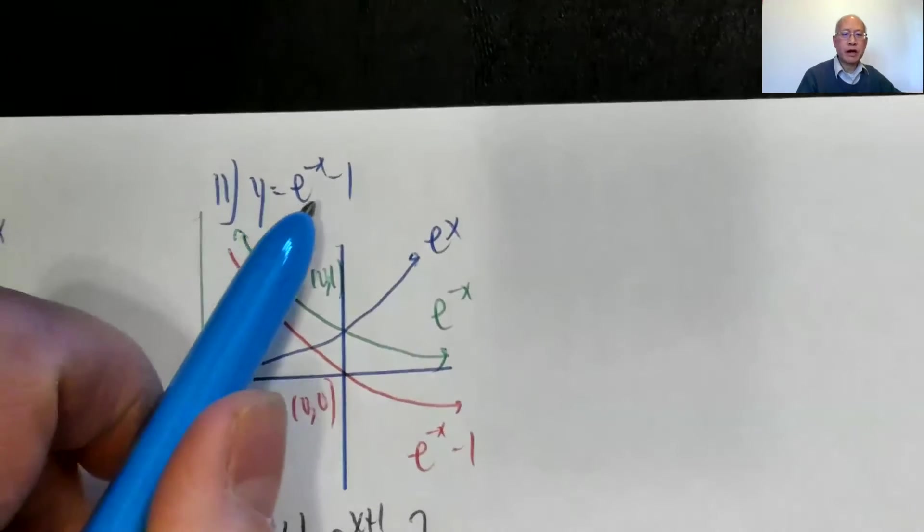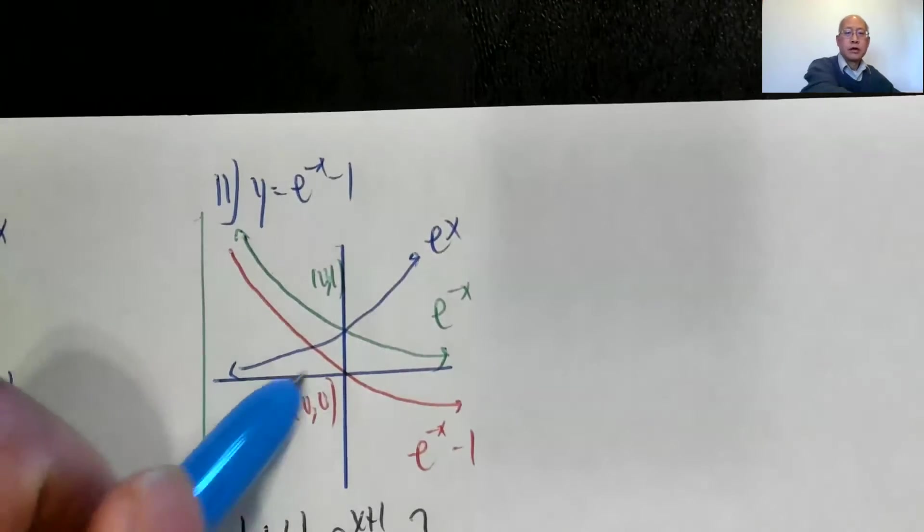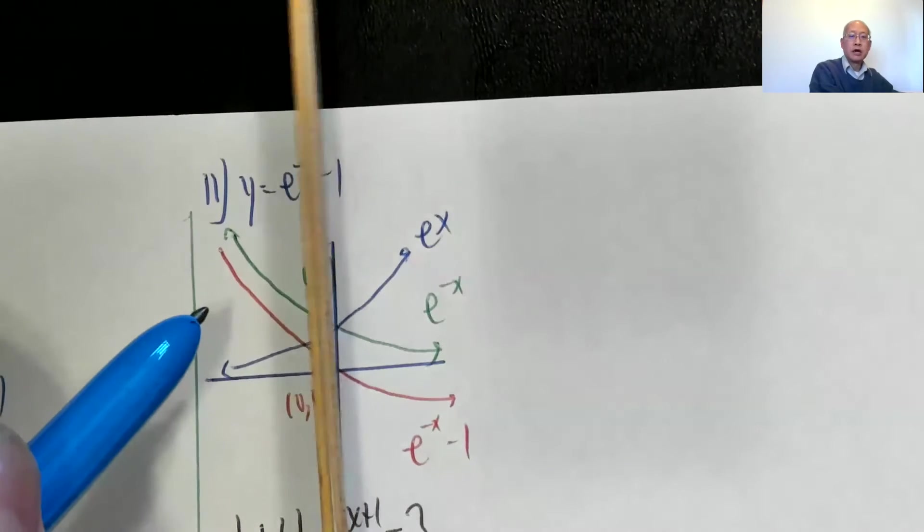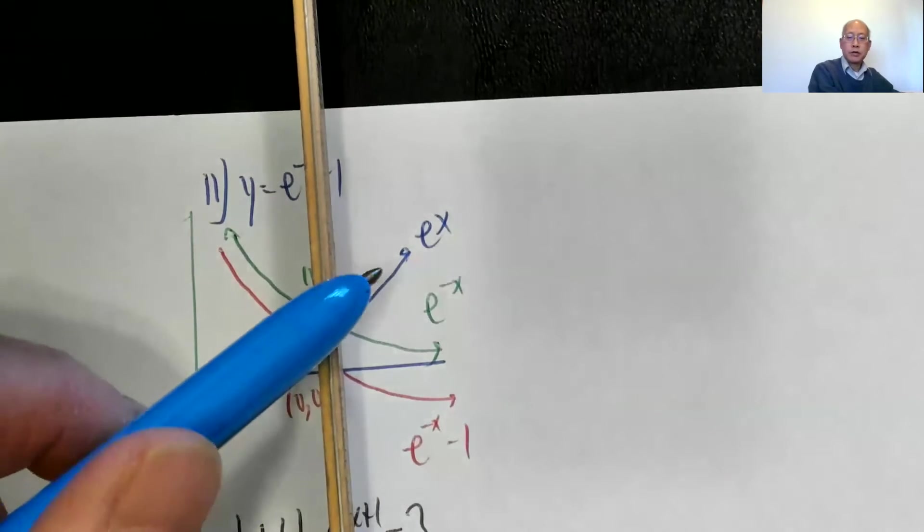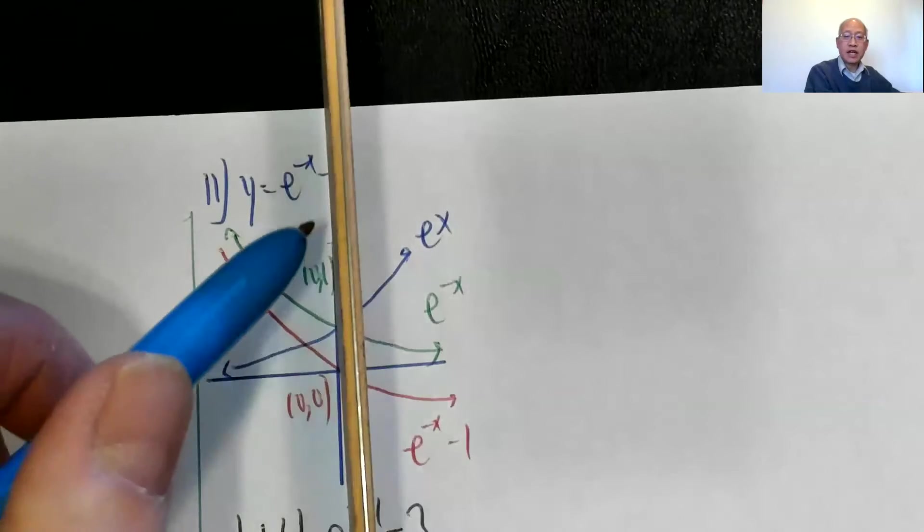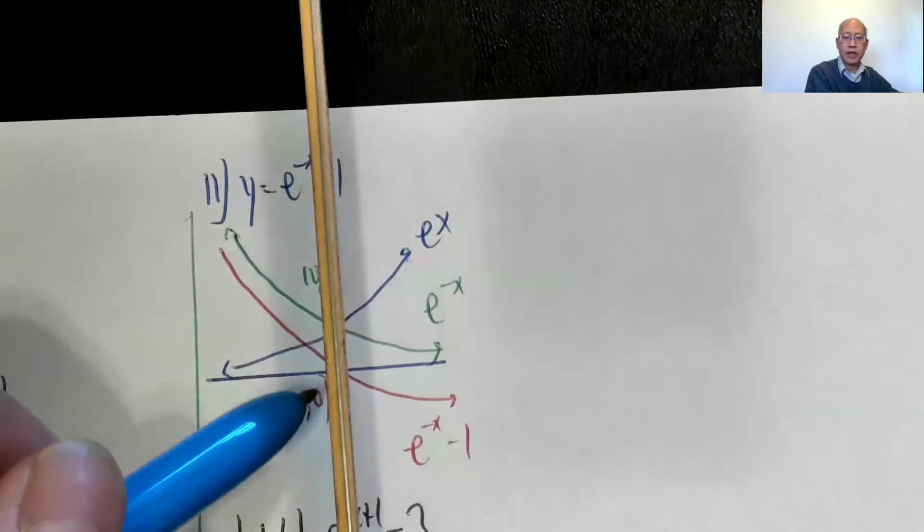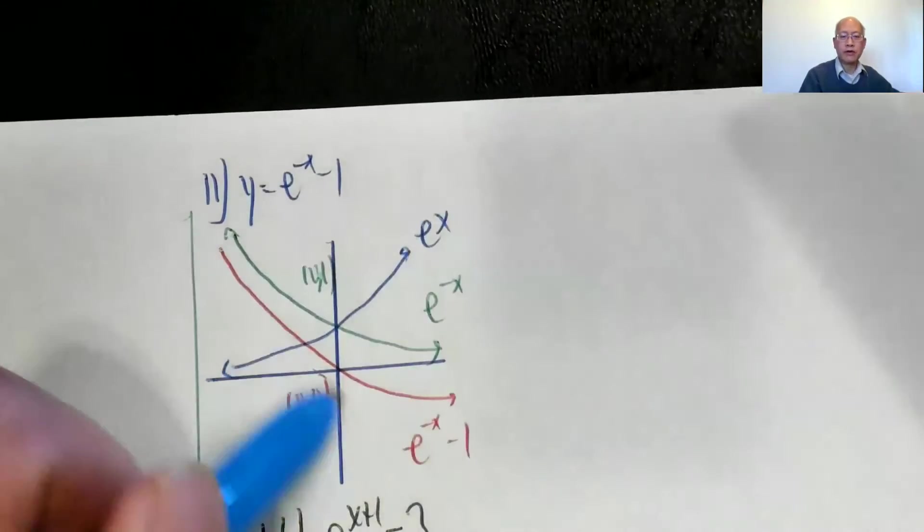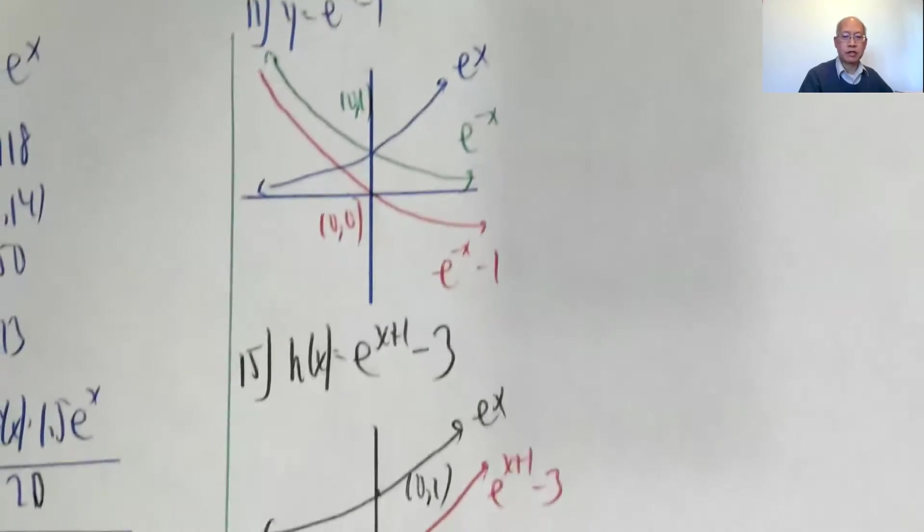y equals e to the negative x minus 1. Okay, here's e to the x, e to the negative x reflects across the y-axis, so the blue is e to the x, e to the negative x is the green, and then e to the negative x minus 1, I just move the whole graph down one unit, so 0, 1 becomes the origin, 0, 0, so the red graph is what I want, e to the negative x minus 1.